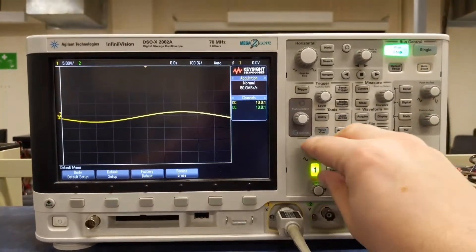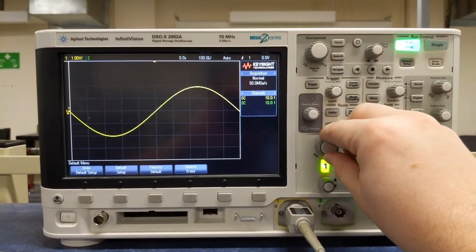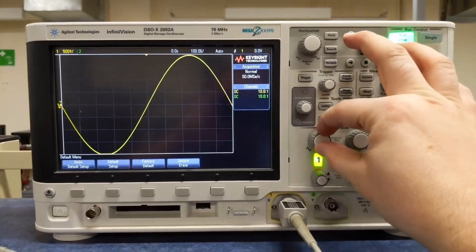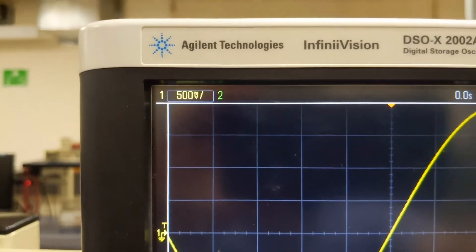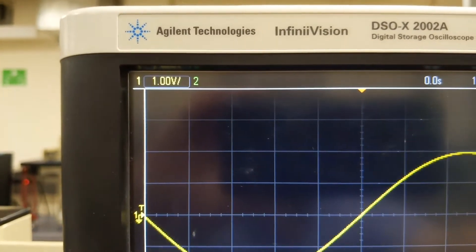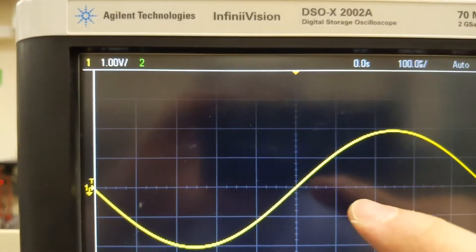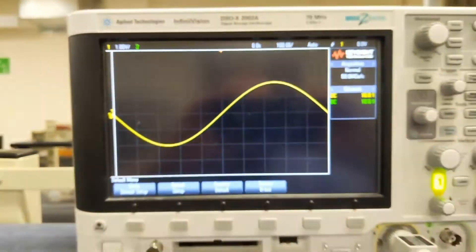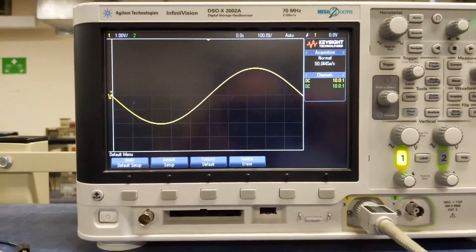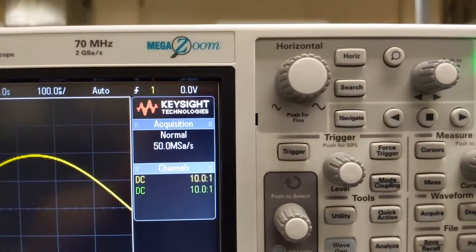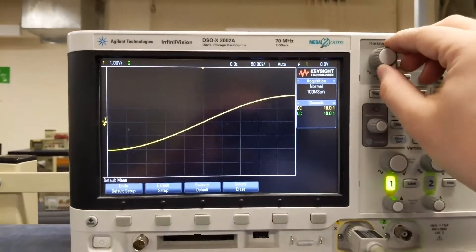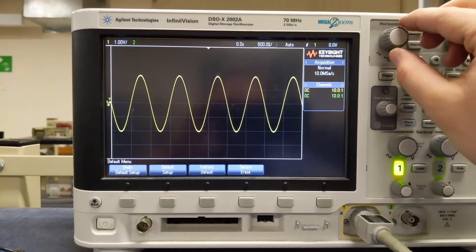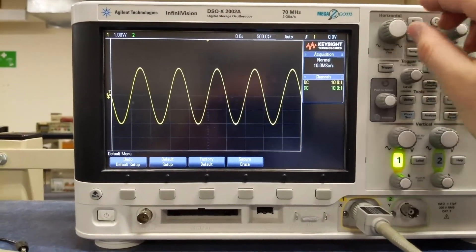So the first thing typically is to adjust the channel sensitivity. So what this is doing is adjusting in the corner here, this volt per division. So you can see as I scale it, this is changing what one division of the scope looks like. The other setting up here is the horizontal. So you want to adjust that and this is going to adjust the horizontal scale as well. So we can get a nice sine wave up on the scope.